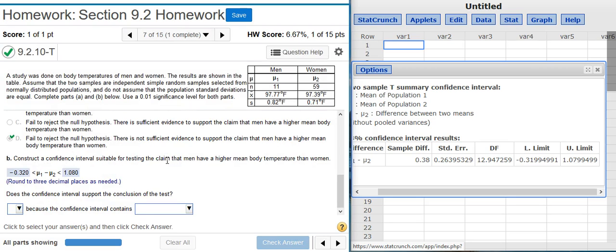Finally, we are asked, does the confidence interval support the conclusion of the test? Well, the conclusion we had from our hypothesis test was that we failed to reject the null hypothesis because there is not sufficient evidence to support the claim that men have a higher mean body temperature than women. If there is not sufficient evidence to support the claim that men have a higher mean body temperature than women, that means it is possible that men could have the same mean body temperature as women. So what we need to look for is, in our confidence interval, could it be that the difference between these two is zero? If the difference between these two is zero, then that means that they could potentially be the same.